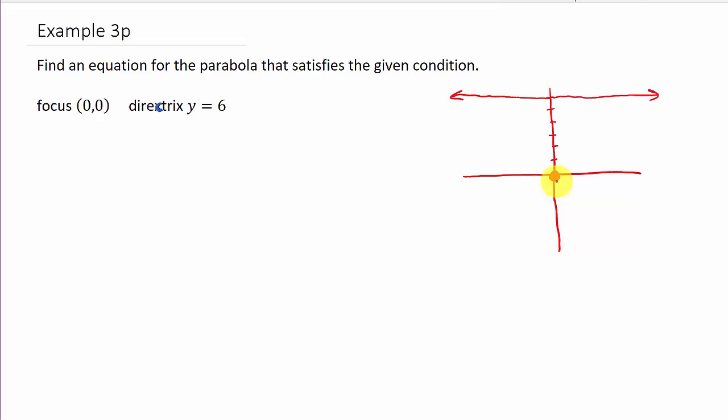Alright, so that means since it opens downward, it's in the form x minus h squared equals 4p times y minus k. So that's the form we have it in. So we need to know h, k, and p. Well, h, k, that's the vertex. Alright. Well, we know the vertex is halfway between the focus and the directrix. So if this is the line y equals 6, this is zero, zero, and so this is six units.